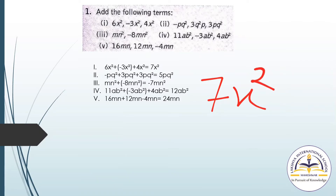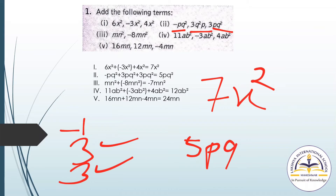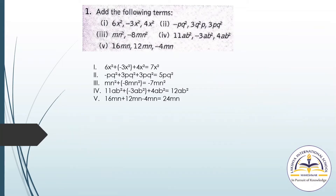Now here pq² is the same term. The coefficients are −1, 3, and 3. Now 3 plus 3 is 6, and 6 minus 1 is 5. So 5pq² will be the answer.